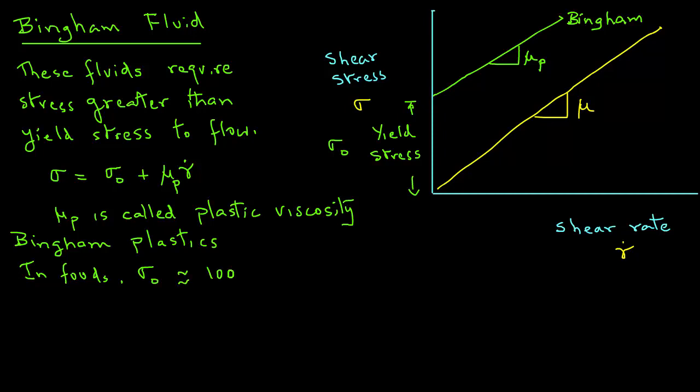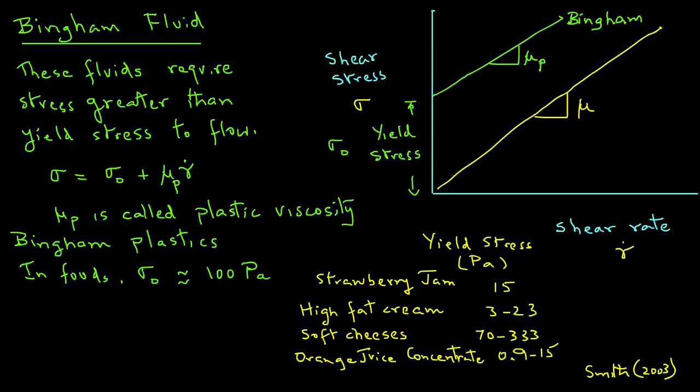For strawberry jam, which is a Bingham plastic, the yield stress is about 15. For high fat cream it's about 3 to 23, and for soft cheeses the yield stress is 70 to 333. For orange juice concentrate, another Bingham plastic, the value is between 0.9 and 15 pascals.